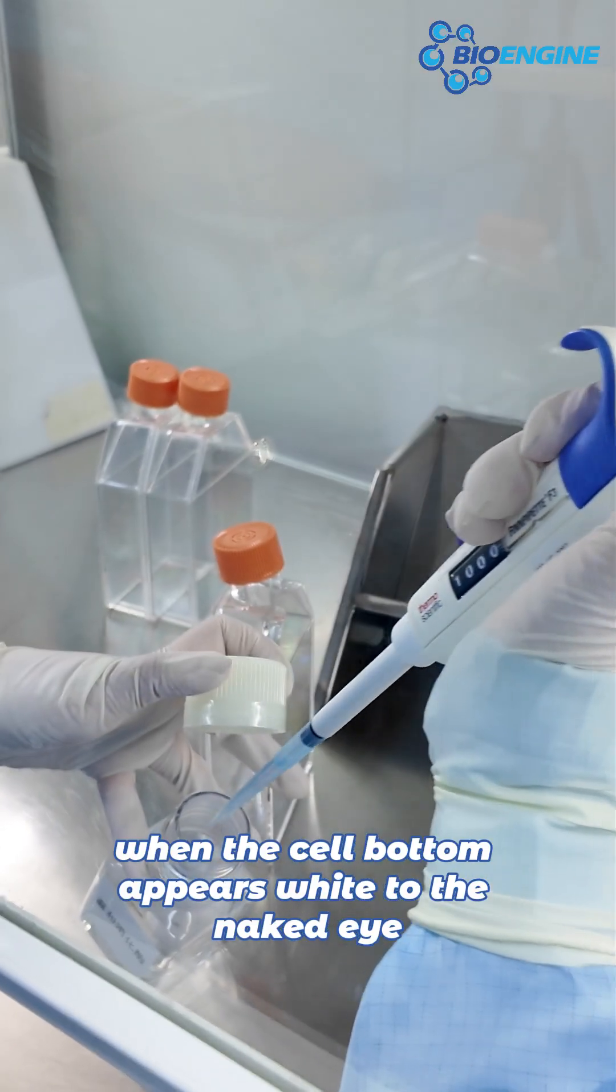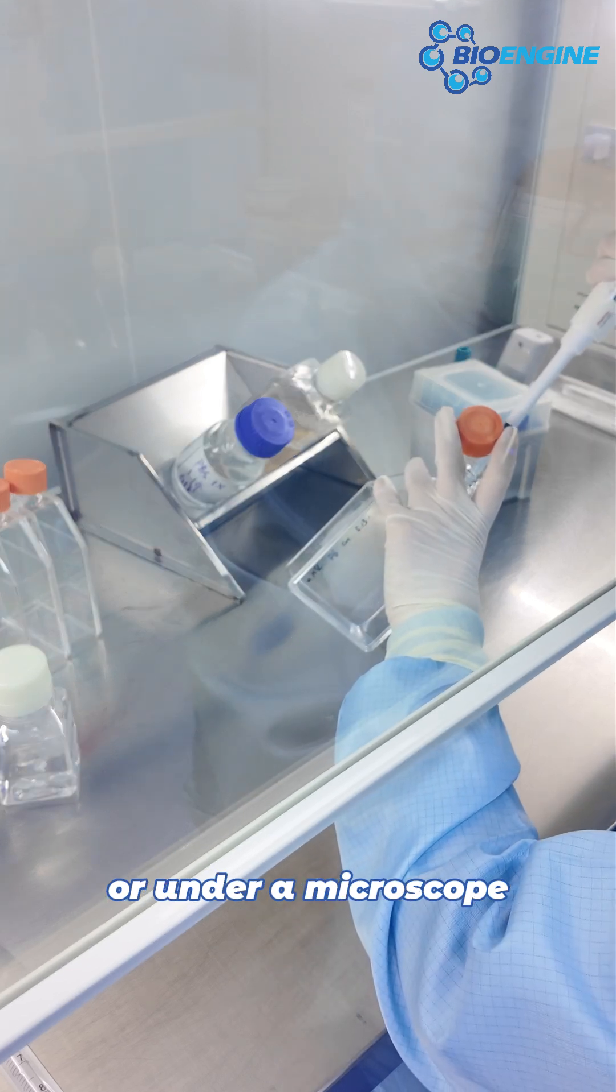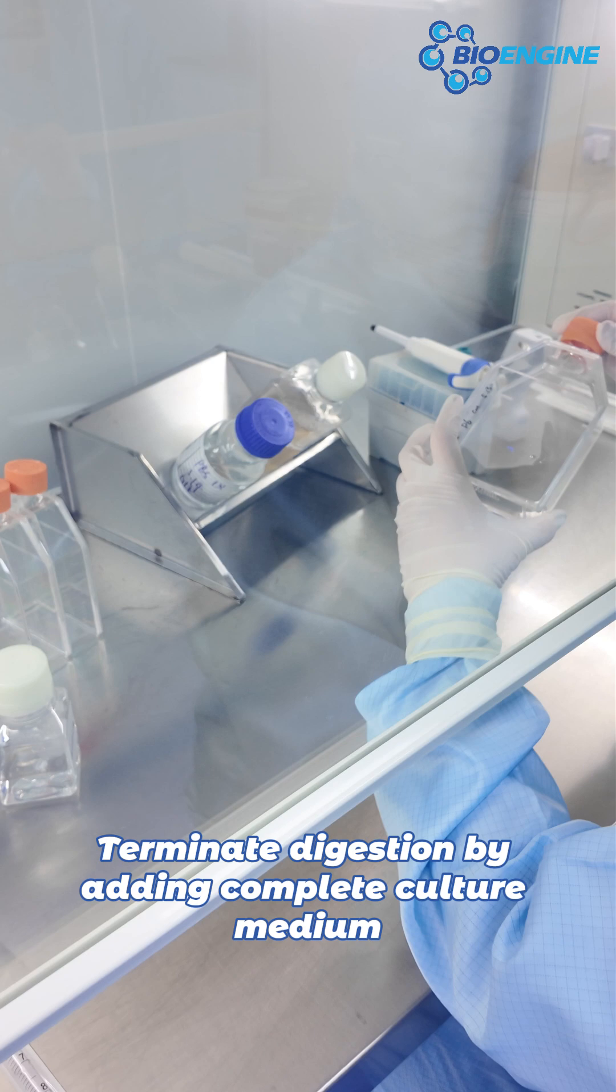When the cell bottom appears white to the naked eye with sporadic detachment, or under a microscope when 80% of cells show rounded edges, terminate digestion by adding complete culture medium.